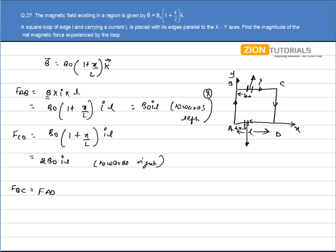If I take any elementary vector on BC and AD, the direction of force will be opposite but the magnitude will be the same, so the forces on BC and AD will cancel with each other. The net force due to BC and AD will be zero.